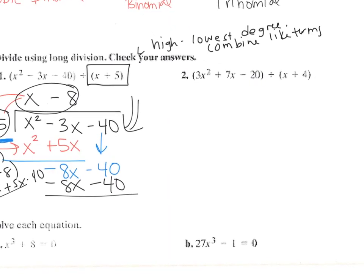Okay, next one. I write x plus 4 on the outside. Oops, I'm going to leave more room. Start lower. So I write x plus 4, and then I write 3x squared plus 7x minus 20.